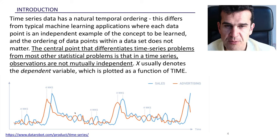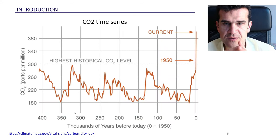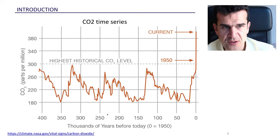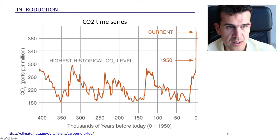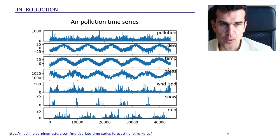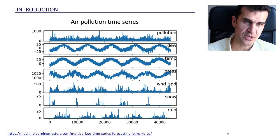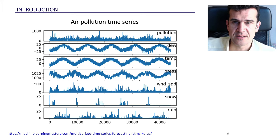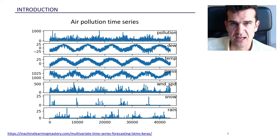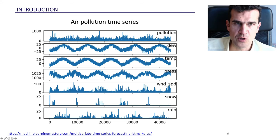Time series are truly ubiquitous — present everywhere. Here is an example of CO2 concentration over the last 400,000 years, and sadly the levels have rocketed in the last 100 years. Another set of examples relates to weather: time series analysis and forecasting is crucial for weather forecasts. At the top we have a pollution indicator, PM2.5, which measures concentration of particulate matter with less than 2.5 micrometers diameter.